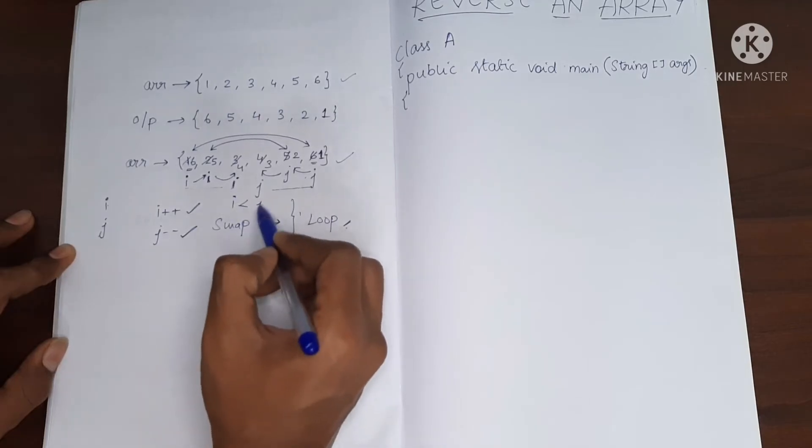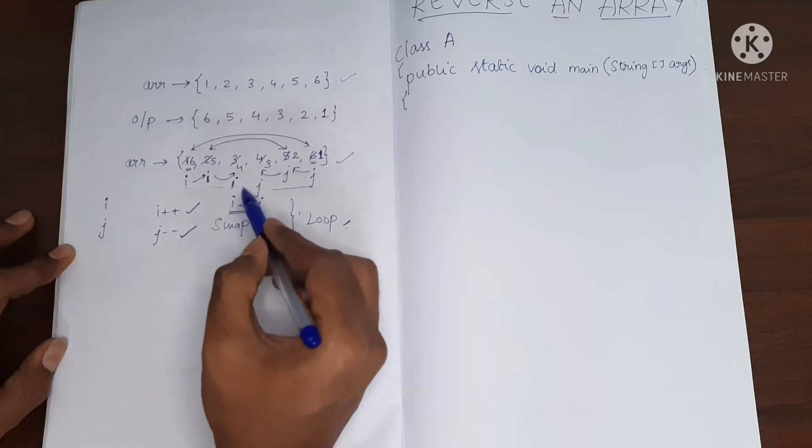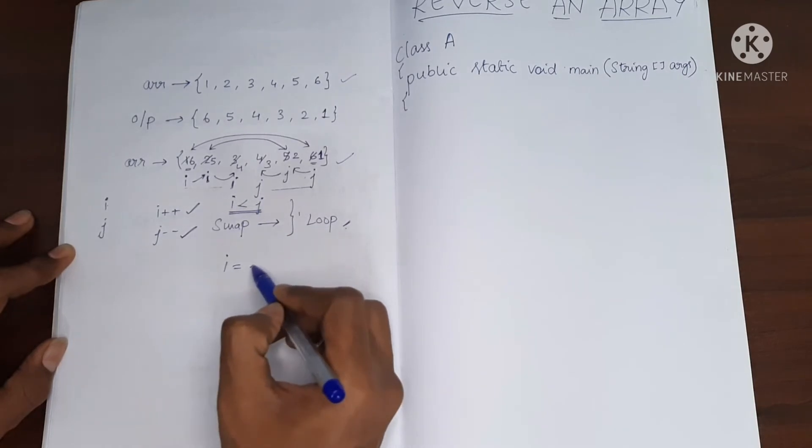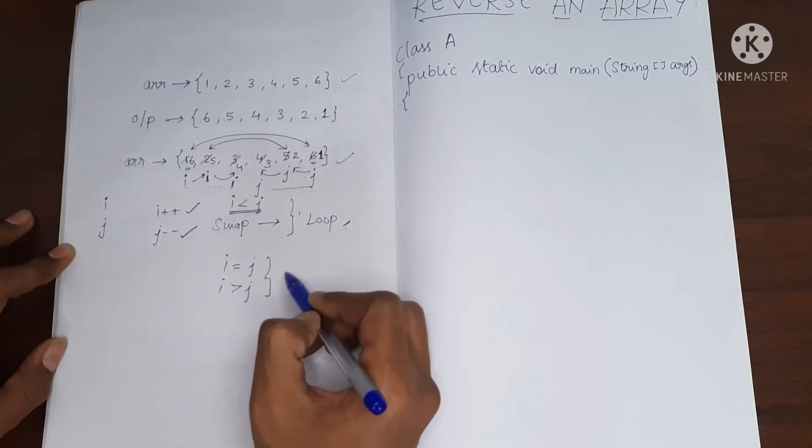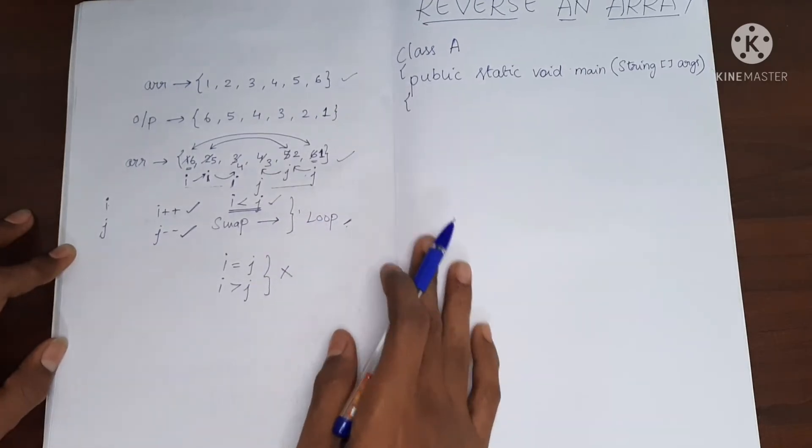i is always less than j, and in that case we are going to swap. When i becomes equal to j or i becomes greater than j, in that case our loop should not run. So this is the terminating condition. So now let's write the program.